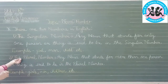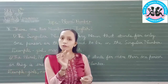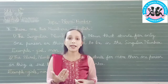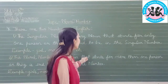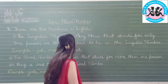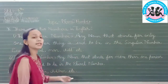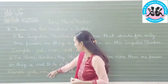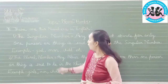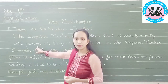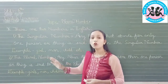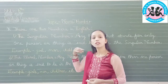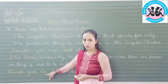Now what is the second? The plural number. All of you are familiar with the word plural? Plural means more than one. Any noun that stands for more than one person or thing is said to be in the plural number. Example: girls, men, children. When we talk about only one person, we say girl. But when we talk about more than one, we say girls. One man, more than one, then M-E-N.